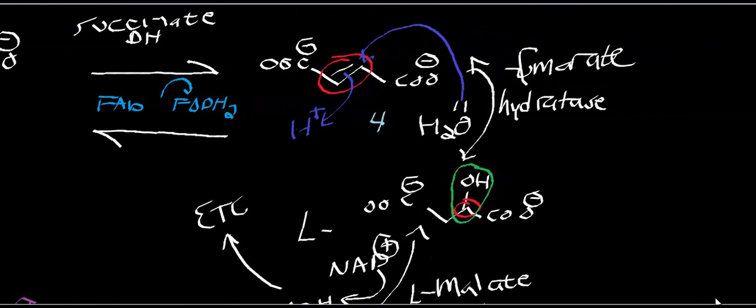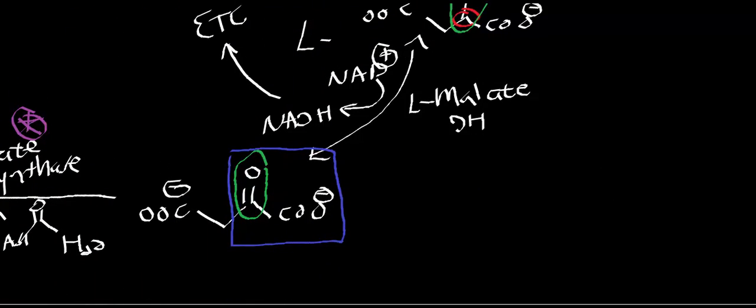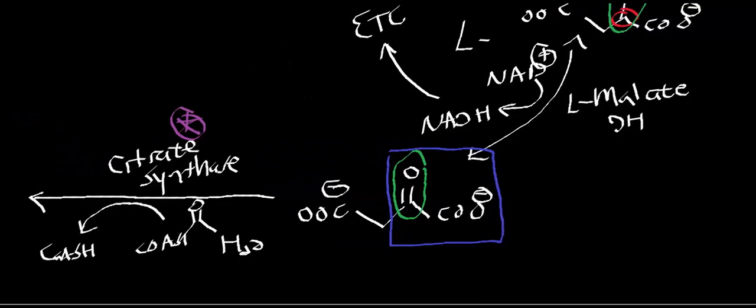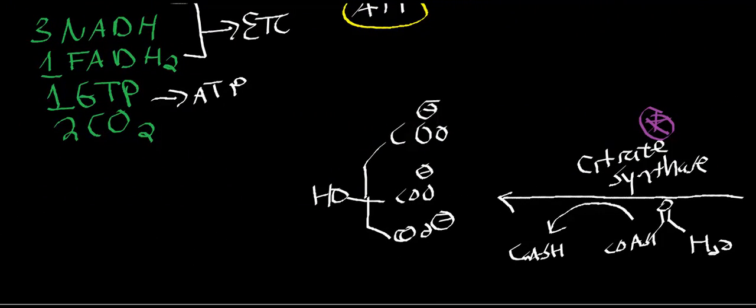And essentially, this is the TCA cycle. In another video, we'll look at allosteric regulation. Recall that in glycolysis, the three allosteric enzymes were hexokinase, phosphofructokinase 1, and pyruvate kinase. I hope this video helped you understand the TCA cycle — we'll look at the allosteric regulation in other videos. See you soon.